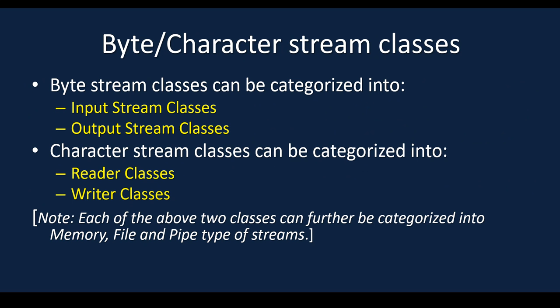Byte stream classes can be categorized into input stream classes, where you get the input, and output stream classes, where you put the output. Character stream classes can be categorized into reader classes and writer classes. Each of these two can further be categorized into memory, file, and pipe types of stream.